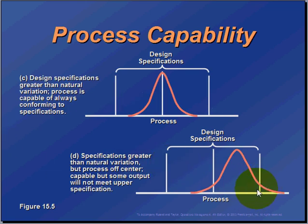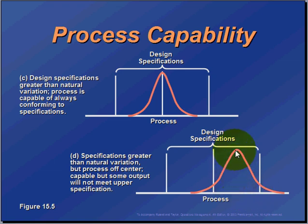So we want to find out if the distance in our specification matches the distance on this curve. If it ends up being less than one, we're going to have a situation where this distance here is less than the distance on the curve — meaning the distance from our process mean to the control limit is less than three times sigma, leaving some values out beyond it as defects.